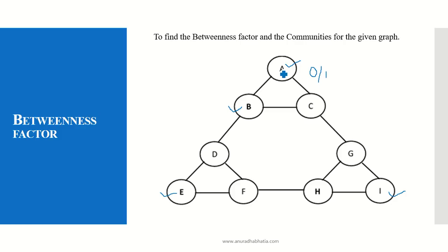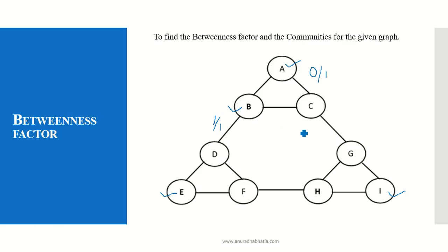When I have to reach from A to D: the path A, B, C is one path which exists and that's the shortest path, and B comes in between. So from A to D it is 1 divided by 1, which equals 1.